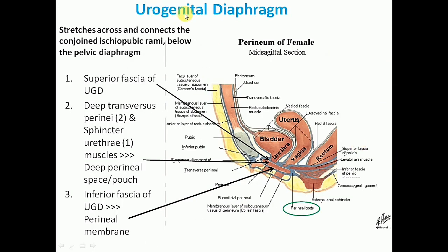The next important support is the urogenital diaphragm, which stretches across and connects the conjoint ischiopubic rami below the pelvic diaphragm. It is formed by three structures: the superior fascia of urogenital diaphragm, a layer of skeletal muscles comprising two deep transversus perini muscles and a single sphincter urethrae muscle, which is the external urethral sphincter. These muscles are situated in the deep perineal space or pouch, bounded inferiorly by the inferior fascia of the urogenital diaphragm, also known as the perineal membrane.